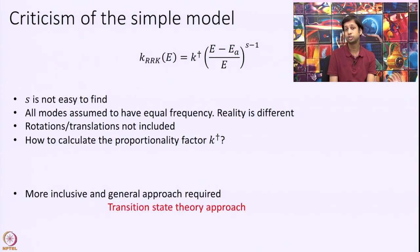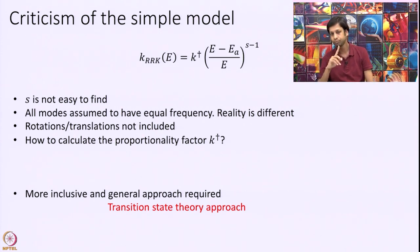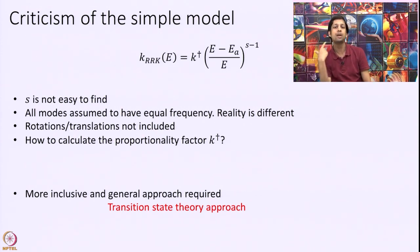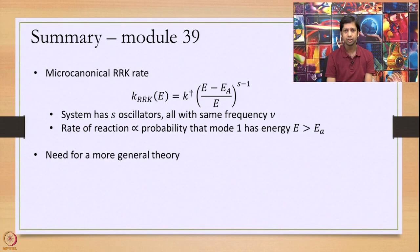We need a more inclusive and general approach, which comes from transition state theory. This RRK model came in 1927–28; transition state theory came in 1935. After 1935, when canonical ensemble transition state theory was developed, people used it to build a constant-energy version as well — that was done by Marcus in the 1950s — and that is what we will discuss in the next modules.